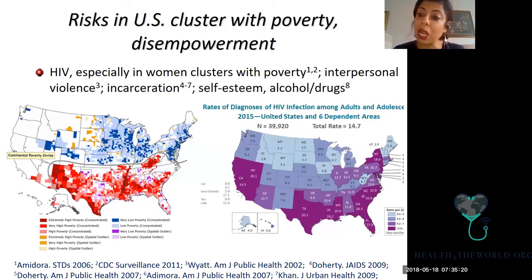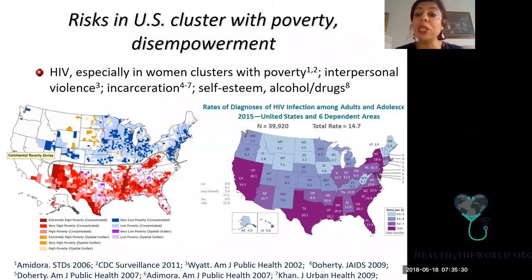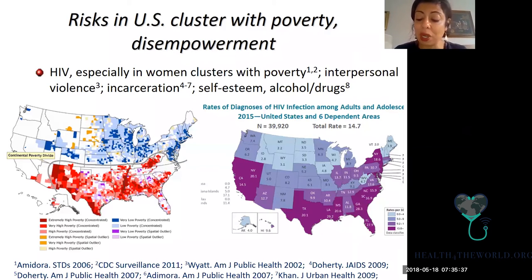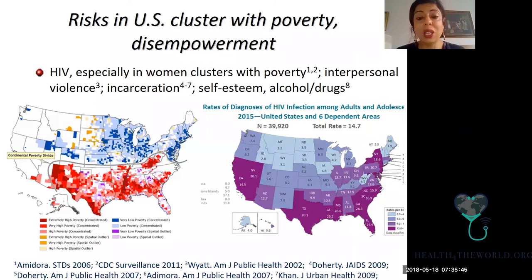With young women and adolescent women in Africa being the most highly affected group, we have to do everything possible so that young women do not have other means of money and economic empowerment than selling sex for money or for goods. It is truly a disease of disenfranchisement, and we have to empower people to get rid of this disease worldwide.